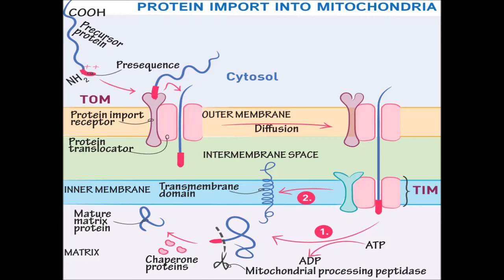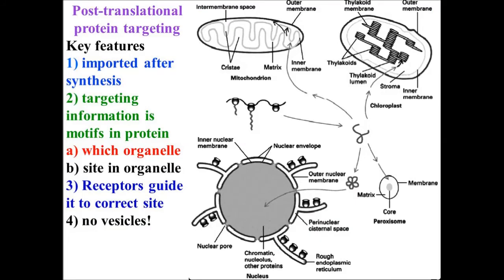The proteins that are targeted to submitochondrial compartments by multiple signals and several pathways—these are targeting to the outer membrane, the inner membrane space, and the inner membrane—often require another signal sequence in addition to the matrix targeting sequence.